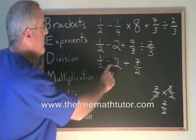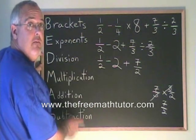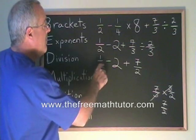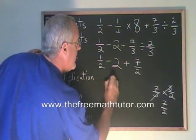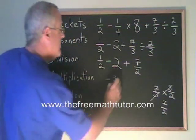Now we have a subtraction and an addition. And again, they're in a tie. And we do the leftmost one first. So we're doing this subtraction. 1/2 minus 2 is negative 3/2. And we copy down the rest of the problem.